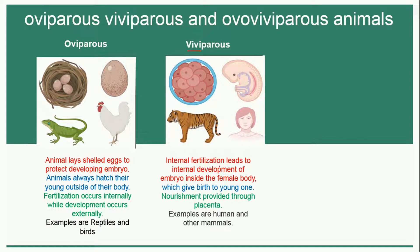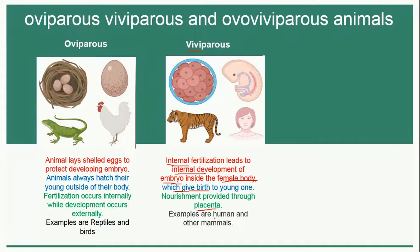In viviparous animals, internal fertilization leads to internal development of the embryo inside the female body. Both the fertilization and the development of the baby occur inside the body of the female. After complete development, the young one is released, and nourishment is provided to the developing baby through the placenta.